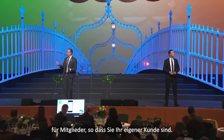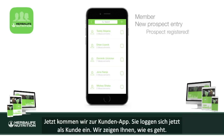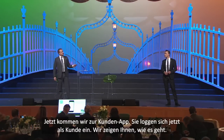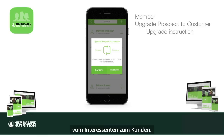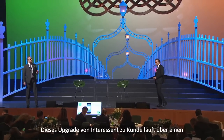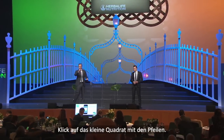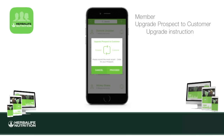You should have saved yourself with your own phone number into that members app database, so you are actually your own customer — that's basically what we're doing here. Now we're going to go to the customers app, log in as a customer, and illustrate the process. But before you can log in as a customer, we need to upgrade you from a prospect to a customer by clicking that little square icon with arrows.